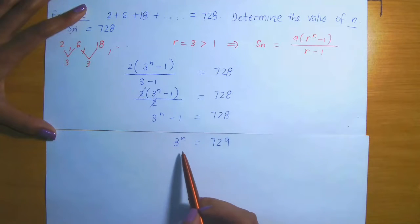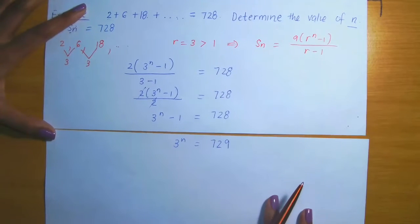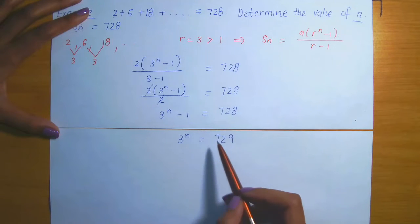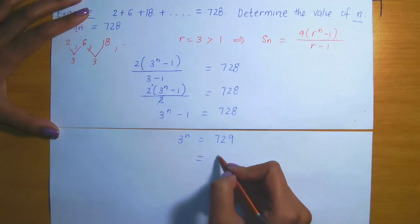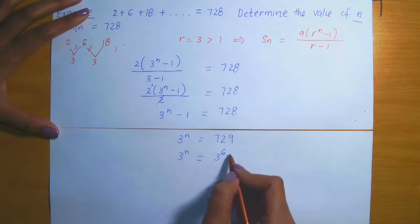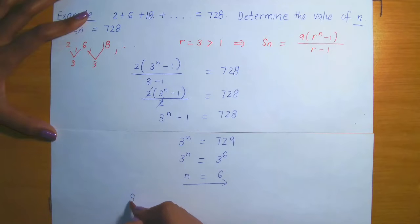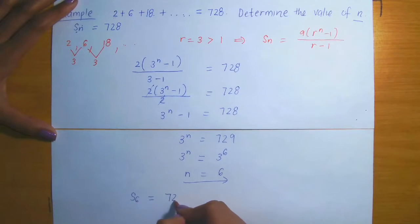Once again we have an exponential expression equal to a constant, solving for the exponent. We need to check if 729 can be rewritten as an exponential expression with base 3. It turns out it can, because 729 is 3 raised to the power 6. So 3^n equals 3^6. Since the bases are the same, n equals 6. This means the sum to the first 6 terms — adding t1 through t6 — gives 728.